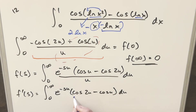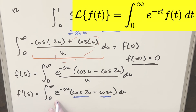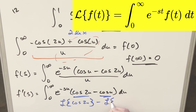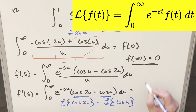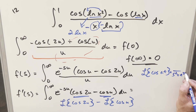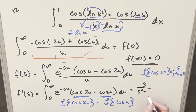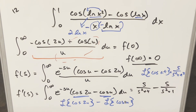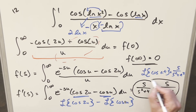At this point we can break this into two integrals: one with cosine 2u times e to the minus su, and the other with cosine u times e to the minus su. These are exactly two Laplace transforms. Using the Laplace transform formula for cosine(at), which gives s over s² plus a², the first term gives s over s² plus 4, and subtracting the second gives s over s² plus 1.